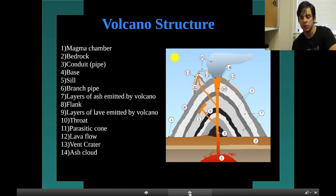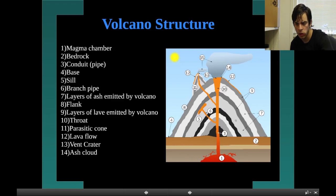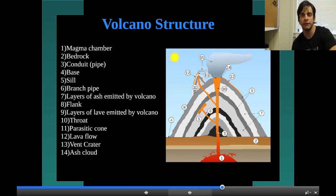Volcano structure. Looking at the picture, the parts include: the magma chamber, bedrock which is the base of the volcano, the conduit pipe, the base, sill, branch pipe, layers of ash made by the volcano, flank, layers of lava made by the volcano, throat, parasitic cone, lava flow, vent crater, and ash cloud. Make sure you're able to identify each part of the volcano if given a picture.